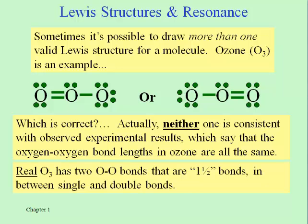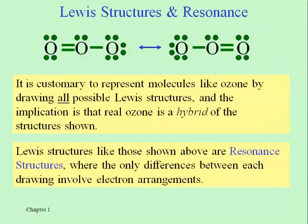Resonance is the phenomenon where we can draw more than one structure that obeys the octet rule, changing only the location of things like double or triple bonds. Ozone is a simple example: those two structures are very similar but the location of the double bond is different. We want to draw both because the real answer to what ozone looks like is a hybrid of the two. Being able to recognize when resonance occurs and how many structures we can draw represents the reality of how these molecules are actually made. In real life, ozone doesn't have a short double bond and a long single bond — the real answer is somewhere in the middle.